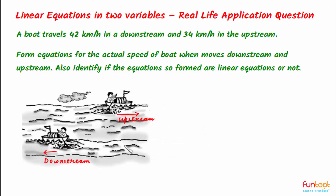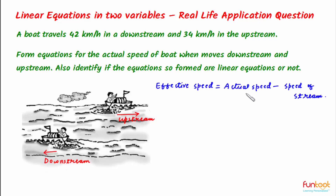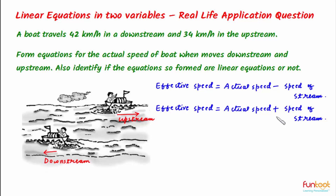The attributes to keep in mind while solving are: effective speed of the boat, actual speed of the boat, and the speed of the stream. While going upstream, effective speed equals actual speed of the boat minus the speed of the stream. While going downstream, effective speed equals actual speed plus speed of stream — so the speed is greater going downstream.